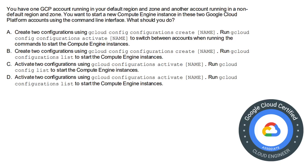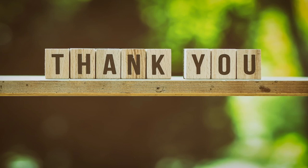Next question: you have one GCP account running in your default region and zone and another account running in a non-default region and zone. You want to start a new Compute Engine instance in these two accounts using the CLI. The correct answer is option A: create two configurations using gcloud config configurations create [name] and run gcloud config configurations activate [name] to switch between accounts when running commands to start the Compute Engine instances.